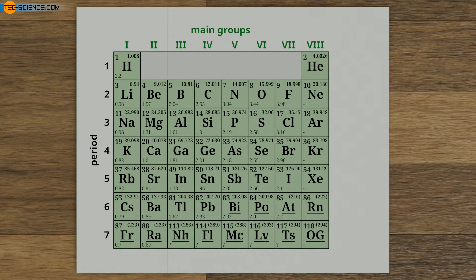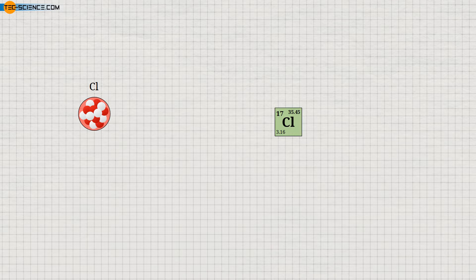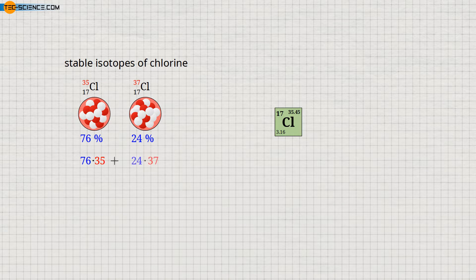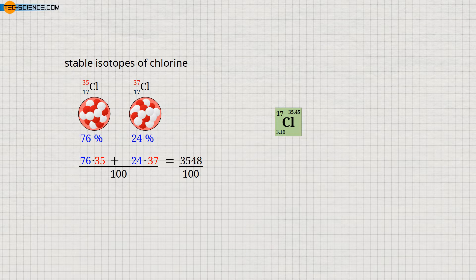This decimal number arises because, although all chlorine atoms have 17 protons, not all chlorine atoms have the same number of neutrons. Atoms that belong to the same element and thus have the same number of protons but a different number of neutrons are called isotopes. Chlorine has two stable isotopes: about 76% of chlorine atoms have 18 neutrons and thus 35 nucleons, while the remaining 24% have 20 neutrons and thus 37 nucleons. Out of 100 randomly selected chlorine atoms, 76 would have 35 nucleons and 24 would have 37 nucleons, giving a total of 3,548 nucleons. Dividing by 100 gives an average of 35.48 nucleons per atom. The small deviation from the literature value is due to rounding of the isotope percentages.